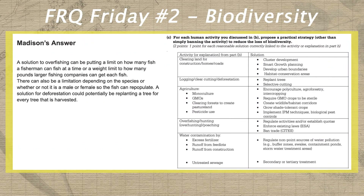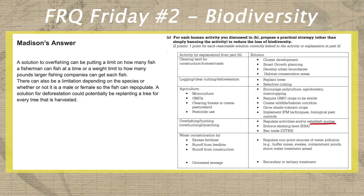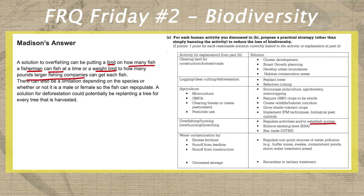In part C, she needs to propose a practical strategy to reduce the loss of biodiversity that resulted from each human activity she identified. For overfishing, she clearly proposes a quota or limit on how many fish a fisherman can catch, or a weight limit for companies. For deforestation, she earns the replanting trees point from the rubric, giving her two additional points in part C.